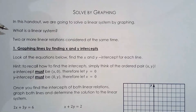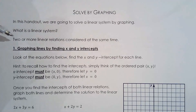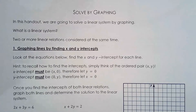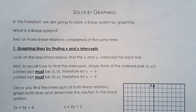We're going to spend the whole unit talking about linear systems. A linear system involves two or more linear relations considered at the same time. You can work with three or four lines simultaneously, but generally in this unit we'll be working with two linear relations at a time. The ideas we cover can still be applied when you have three, four, or five linear relations.